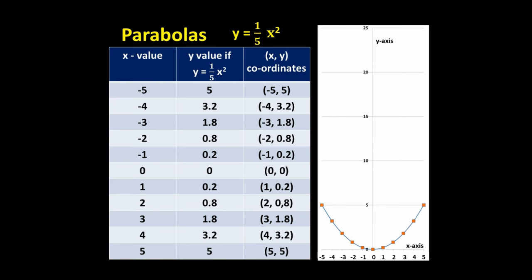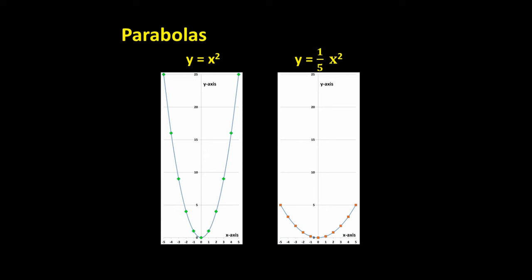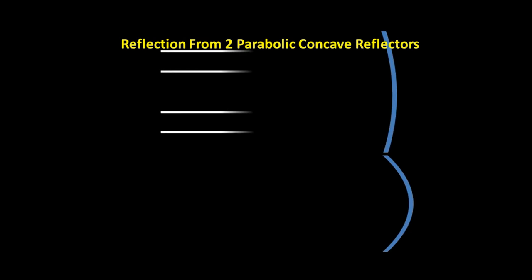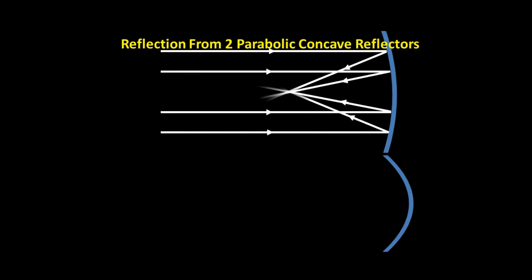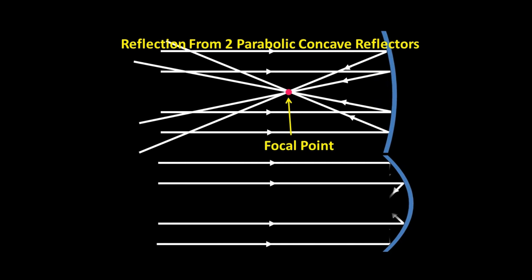You can compare the two parabolas if we place them side-by-side. Now all parabolic concave reflectors can focus parallel beams of light to a focus point. The top one here focuses the light beams to the point shown. The bottom one, being more curved, has a much shorter focal length.